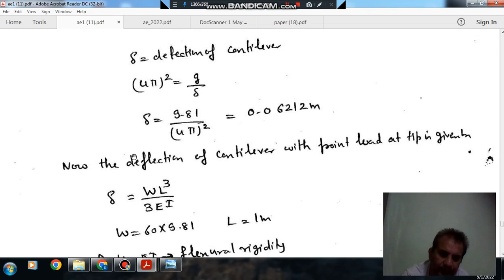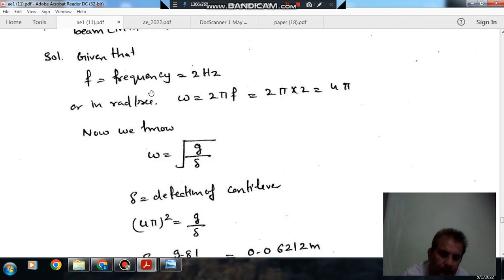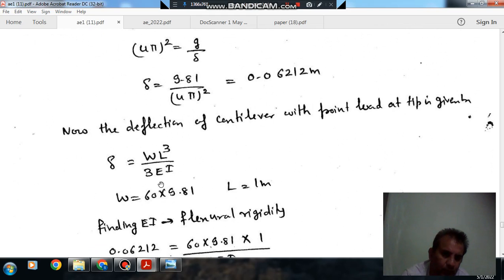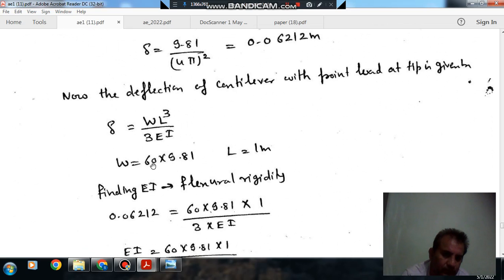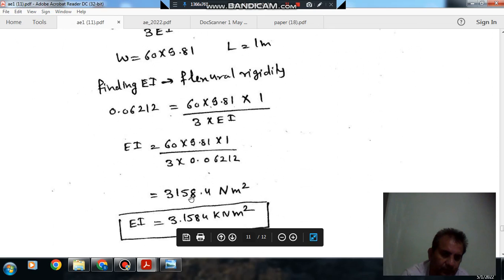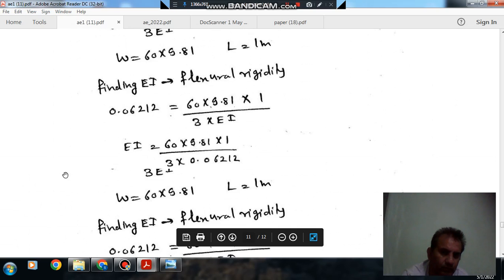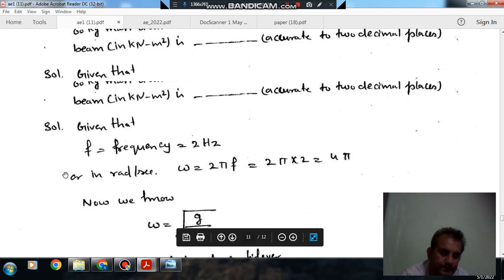This is deflection of cantilever. In case of cantilever with point load at end point, the deflection is given as WL cubed by 3EI. W is mass times g, which is 60 times 9.81. L is 1 meter. So 0.06212 equals 60 times 9.81 times 1 cubed divided by 3EI. EI comes out as 3158.4 Newton meter square or 3.1584 kN meter square. The answer is 3.16 kN meter square.